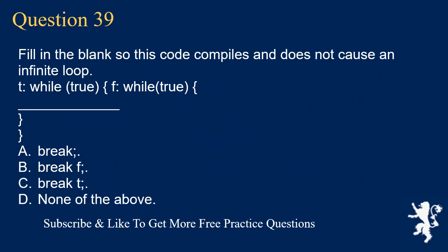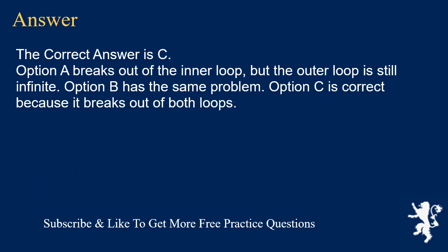Question 39. Fill in the blank so this code compiles and does not cause an infinite loop. T: while (true) { F: while (true) { ___; } } A. break. B. break F. C. break T. D. None of the above. The correct answer is C. Option A breaks out of the inner loop, but the outer loop is still infinite. Option B has the same problem. Option C is correct because it breaks out of both loops.